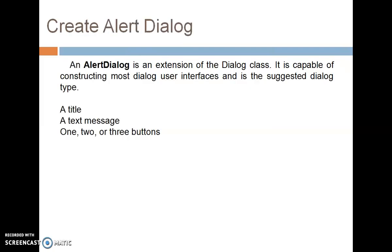The next topic is Alert Dialog Box. An Alert Dialog is an extension of the Dialog class and is capable of constructing most dialog user interfaces. It has three components: the title of the dialog box, a text area where the alert message is displayed, and action buttons — which may be one, two, or three buttons.